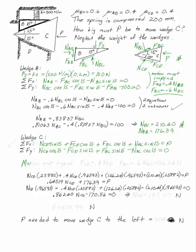Again, motion has to impend because we're asked to find out when the wedge moves. So I have FCD is going to be equal to 0.4 times NCD and FBC is going to be 0.6 times NBC. But I know what NBC is, so I can say FBC is 126.24 newtons.